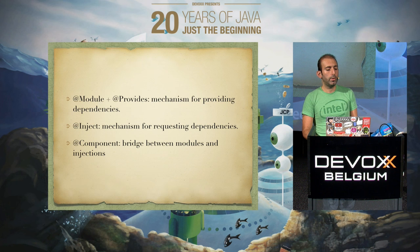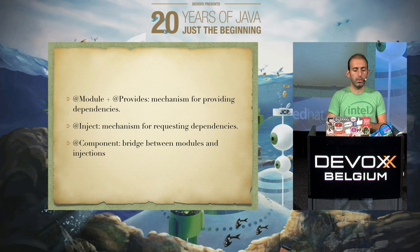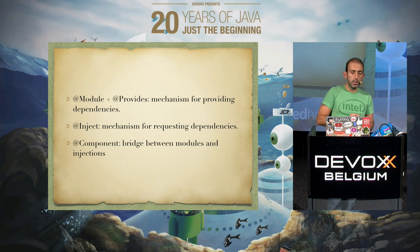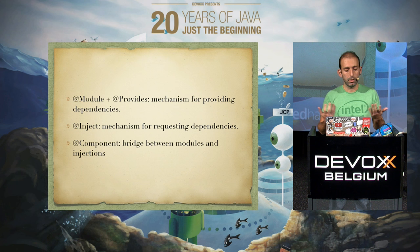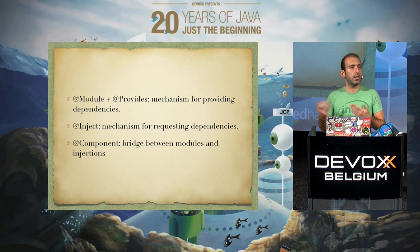For Dagger, you have three concepts. One is module and provides, which is the mechanism to provide dependencies — it works like factories and produces resources. The second concept is inject, which is the mechanism for requesting dependencies, basically declaring that this part needs the produced dependency. The final concept is component, which acts as a bridge between modules and injections.